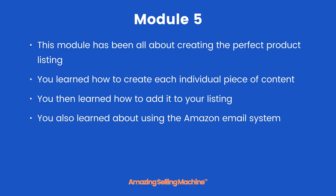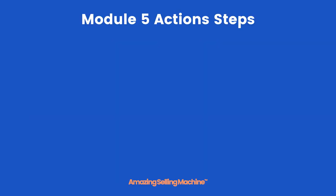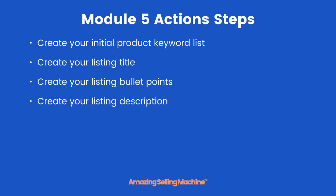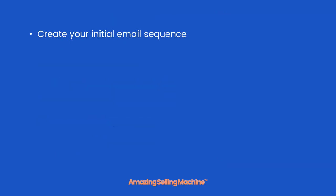Module 5 action steps: create your initial product keyword list, create your listing title, create your listing bullet points, create your listing description, create your listing images, and calculate your initial price. Add all of the above to your product listing, then create your initial email sequence. Finally, sign up for MBS when you have inventory or your inventory is on the way to Amazon.